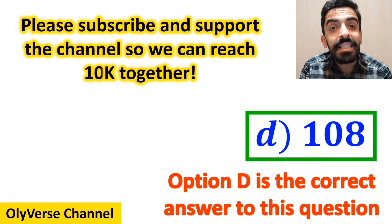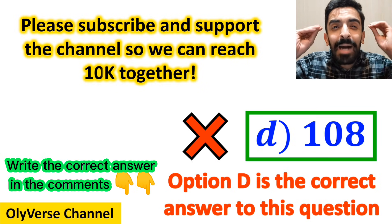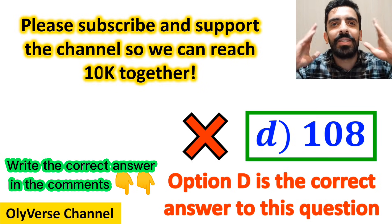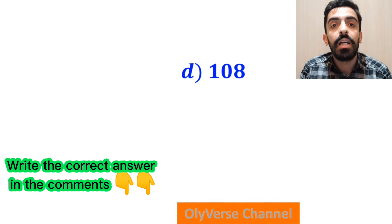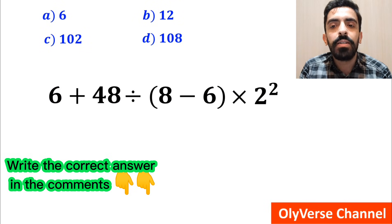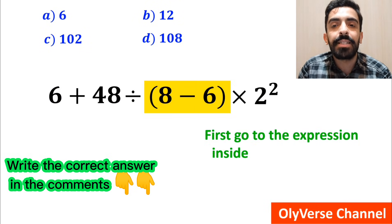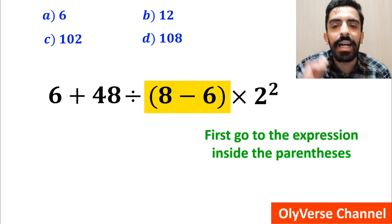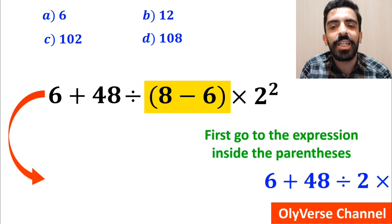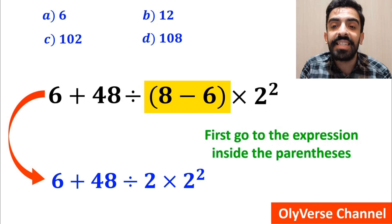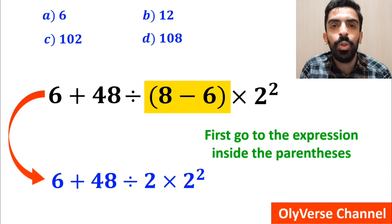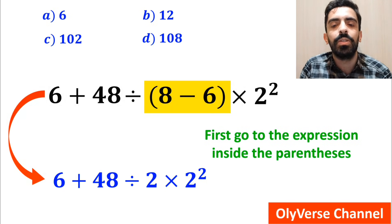However, this answer is absolutely wrong. Some other people when solving this question first go to the expression inside the parenthesis, and instead write 6 plus 48 divided by 2 times 2 to the power of 2.